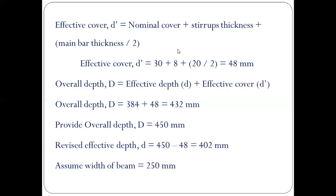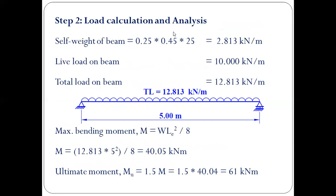Step 1 summary: effective length = 5 meters, overall depth = 450 mm, effective depth = 402 mm, assumed width = 250 mm. Step 2: Load calculation and analysis. Self weight of the beam is calculated as cross-sectional area times unit weight of concrete: 0.25 × 0.45 × 25 = 2.813 kN/m. Live load as given is 10 kN/m. Total load on the beam is 12.813 kN/m.